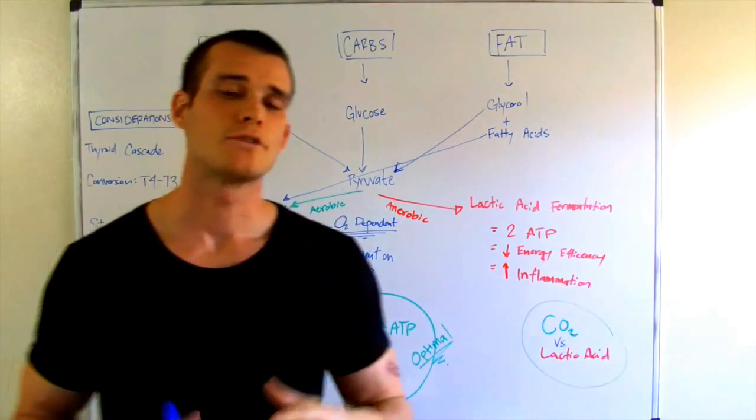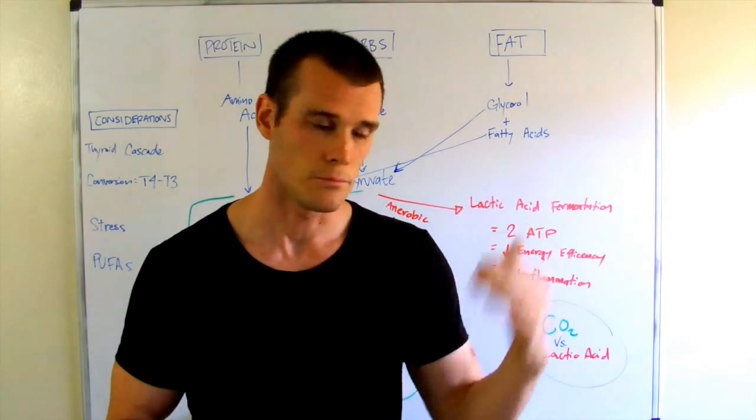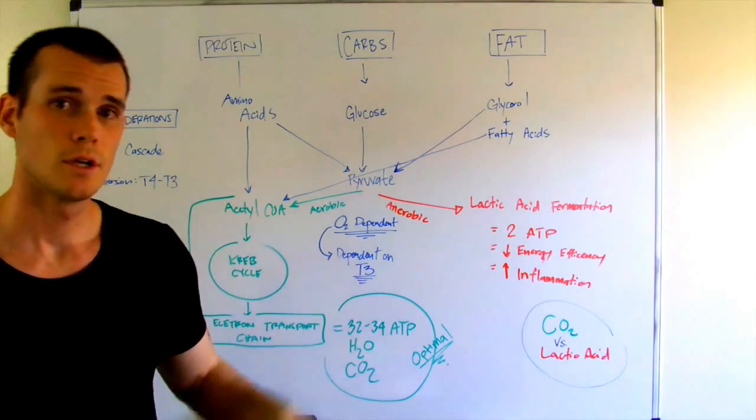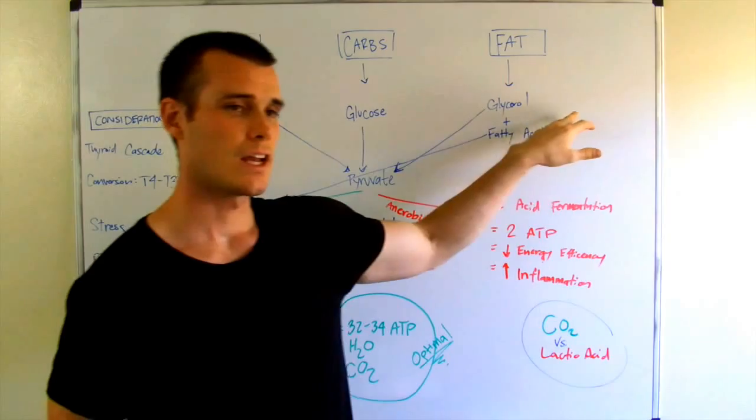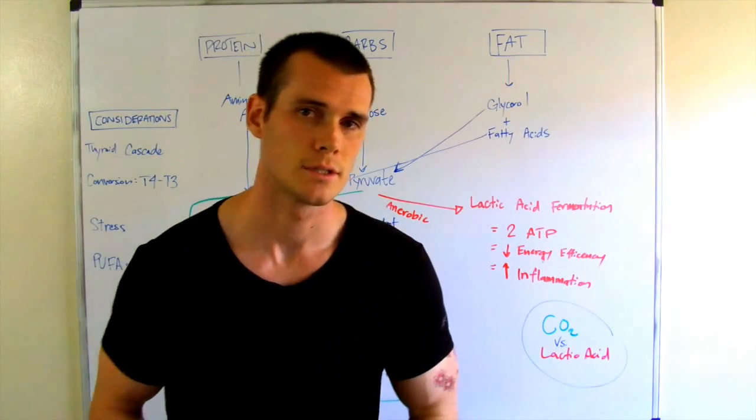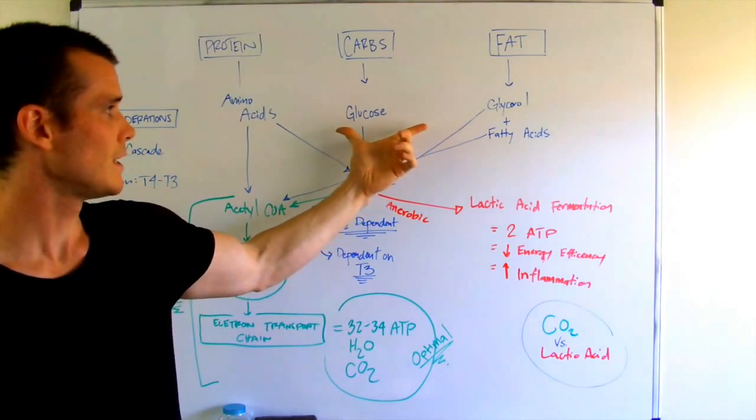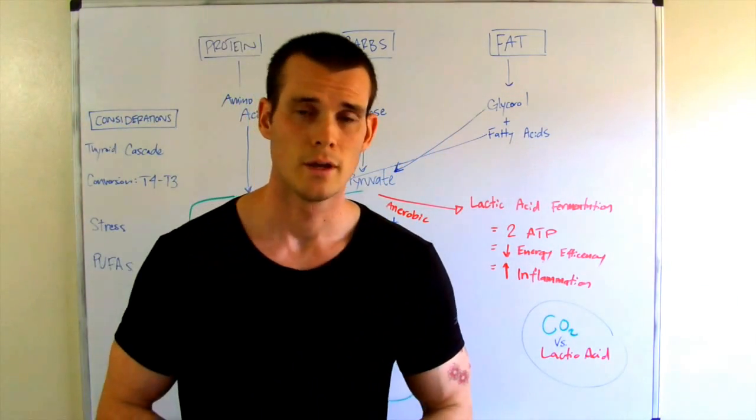Basically, after digestion and absorption, the body should be breaking these products down into amino acids, certain monosaccharides. Here we have glucose and glycerol and fatty acids. Through certain metabolic processes, we are going to be left with the byproduct of pyruvate.